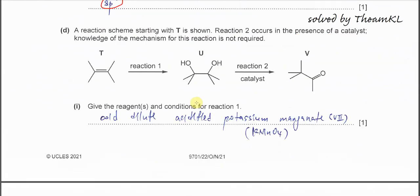Part D. A reaction scheme starting with T undergoes two reactions. Reaction 1, we know that T will undergo oxidation because the C=C double bond breaks, the pi bond breaks, and it forms diols. Give the reagent and condition for reaction 1. Very easy. Cold dilute acidified KMnO4. And reaction 2, you need to use catalyst. It will form V. How to form this, you don't need to know. Just follow. At the end, after reaction 2, it forms V, which has a ketone group.